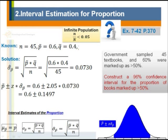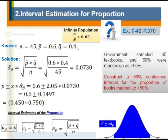For the 96% confidence level, we use 0.48 to check table A1 and get a z-score of plus and minus 2.05. The confidence interval is: sample proportion 0.6 plus and minus 2.05 × 0.0773, which equals ±0.1497. The upper limit is 0.6 + 0.1497 = 0.7497 and the lower limit is 0.6 − 0.1497 = 0.4503. That means 96% of the population proportion will lie between approximately 45% and 75%.